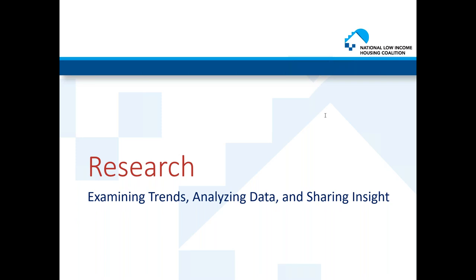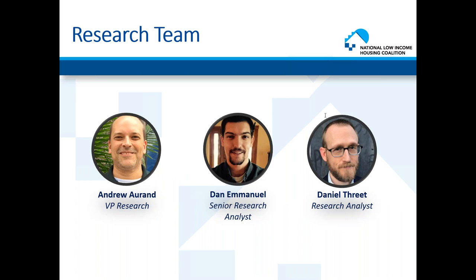Moving on to our research team. Our team analyzes data, identifies trends, and paints the picture of the country's housing needs to support data-driven advocacy. Andrew Oren is our vice president leading the research team, joined by Dan Emanuel, senior research analyst, and Daniel Freak, research analyst. Our annual report 'Out of Reach' comes out each spring and examines how out of reach housing is for low-wage workers, including a housing wage map for each state.